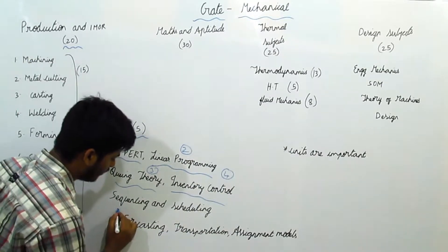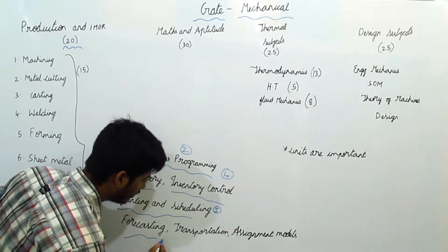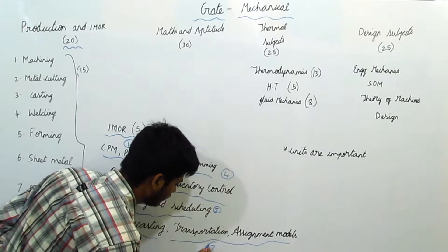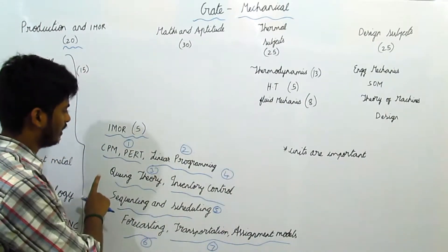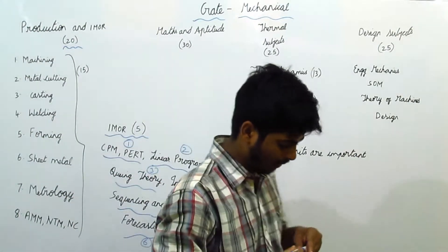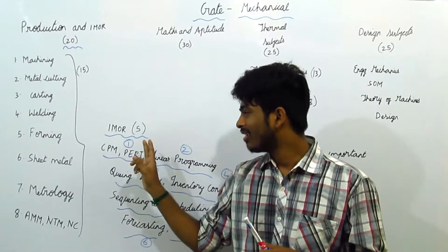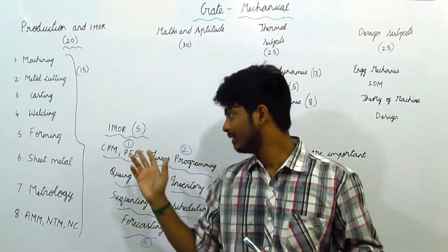And this sequencing, engineering is fifth topic. Forecasting, transportation, and assignment combined to form sixth topic. So, for I1OR, you can't spend so much time for I1OR. They may ask from 2 to 3 marks, right? Maximum 5 marks.